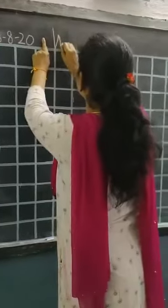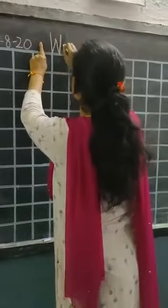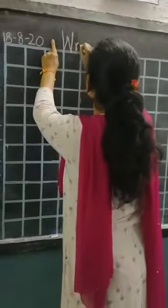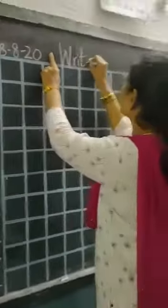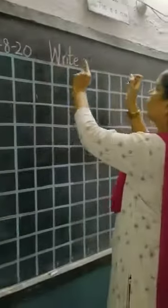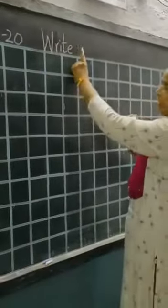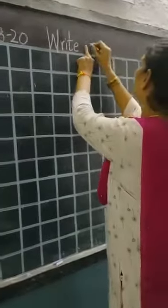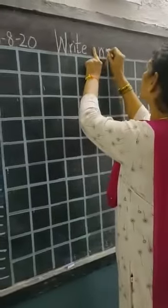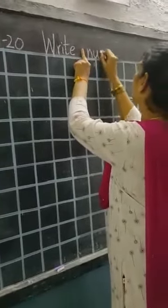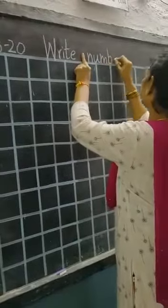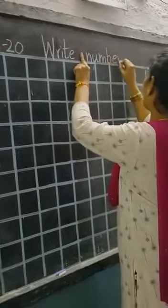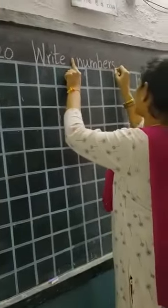Capital W, R, I, T, E — write. Finger space, numbers: N, U, N, B, E, R, S — numbers.